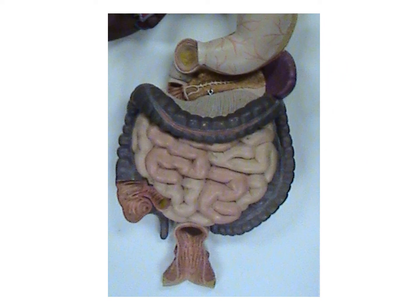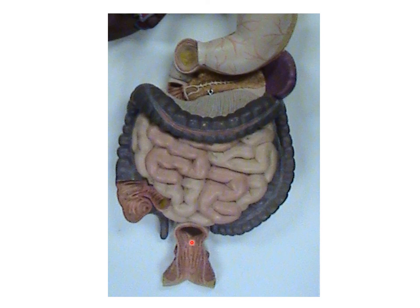I apologize for the graininess of this image, although I think you can still very easily identify the structures of the large intestine. Here's the vermiform appendix. This is the terminal end of the ileum, so this is the ileocecal valve — the valve that controls the flow of substances from the ileum to the cecum. This is the cecum, ascending colon, transverse colon, descending colon. The sigmoid colon is back here. You can see the rectum running here, and then you have the anal canal and the anus. Also, these pockets are the haustra.